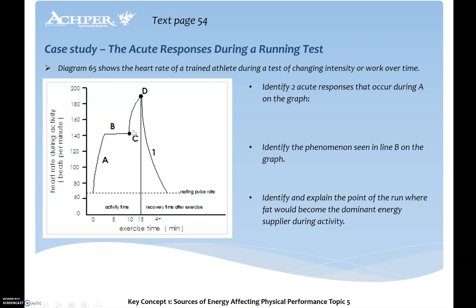The spike from C to D is probably looking at OBLA — moving past our lactate threshold. Then from D back down to around 60 beats per minute, we're looking at the EPOC (excess post-exercise oxygen consumption) stage. The question asks: identify two acute responses that occur during phase A on the graph.